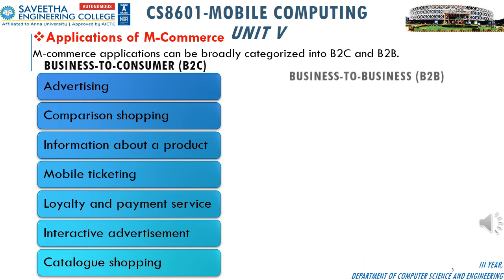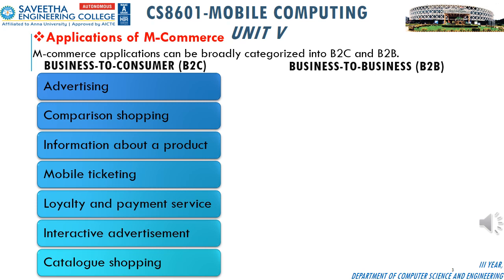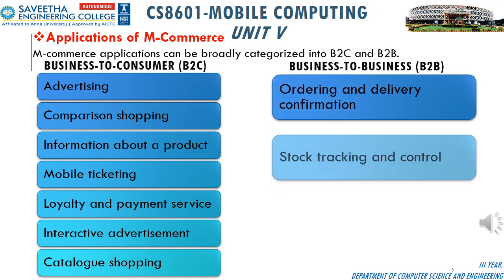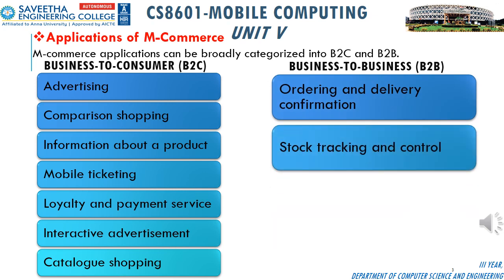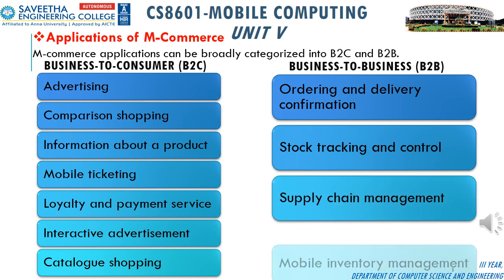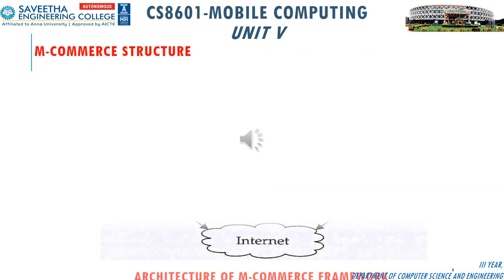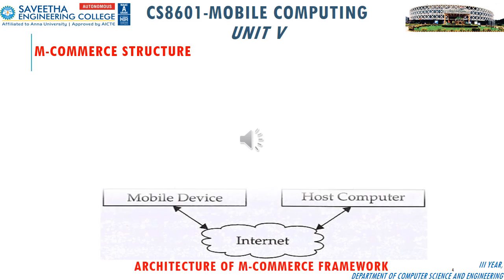Business-to-business application involves mobile phone-based communication between manufacturers and retailers. This includes services like ordering and delivery confirmation, stock tracking and control, supply chain management, mobile inventory management, and so on.